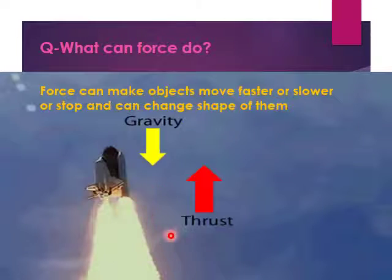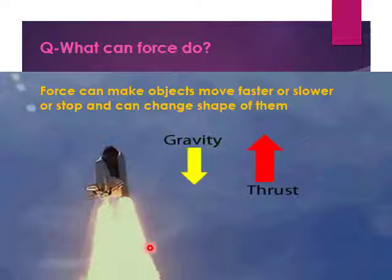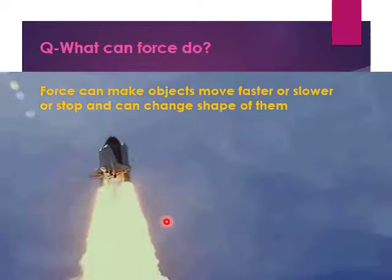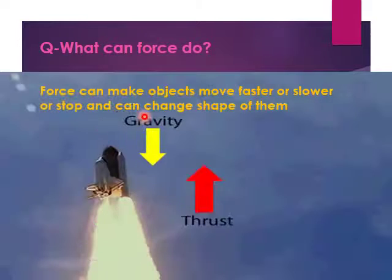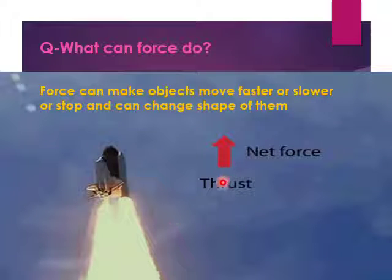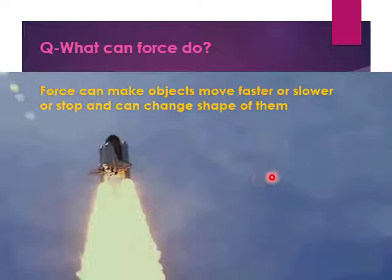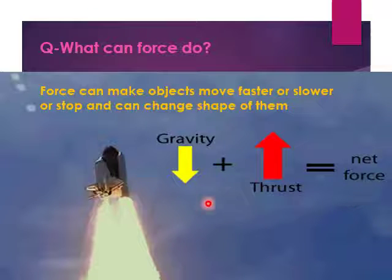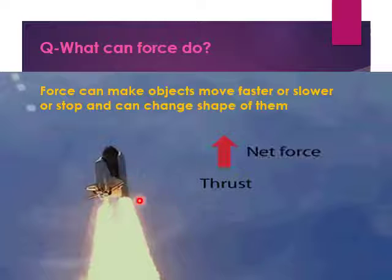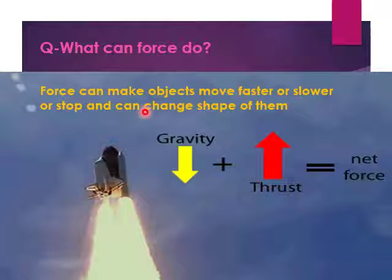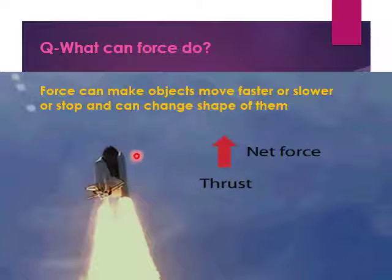My dear students, you can see in this video there is a rocket moving — two forces are acting on this rocket at the same time. One force is gravity, that is, moving downward. The second is the thrust of this rocket, that is, moving upward. Both forces act upon this rocket — that is the net force. The thrust is greater than the force of gravity, so that is why it is moving up. Force can make the object move faster — you can see the object is moving very fast.